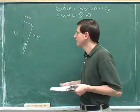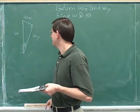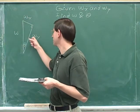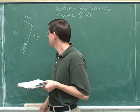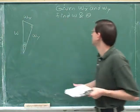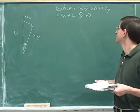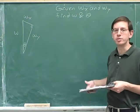Here's our next problem. Here's a right triangle. It has sides of w sub x, w sub y, and w. An angle of theta. If you're given w sub x and w sub y, find w and theta.